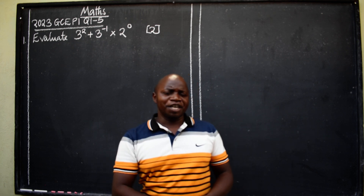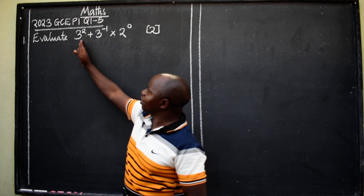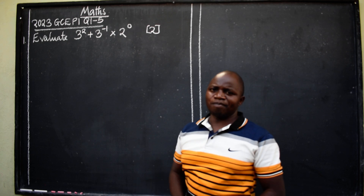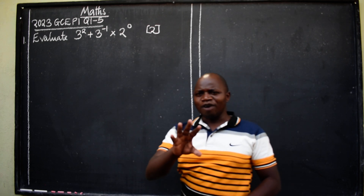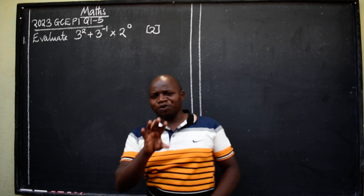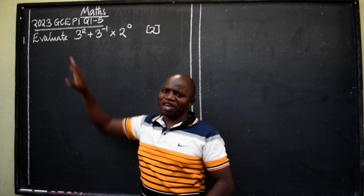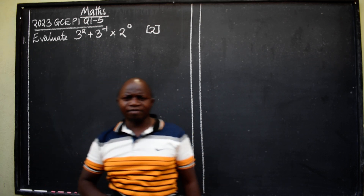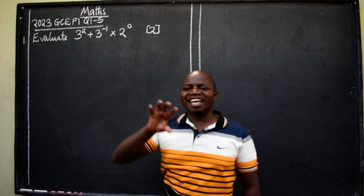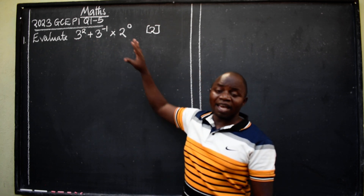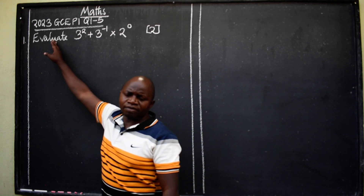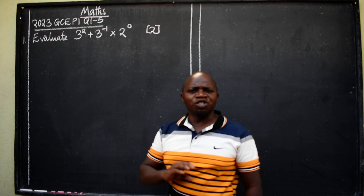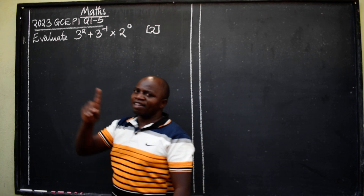Let's begin with the first question. Evaluate 3 to the power 2, plus 3 to the power negative 1, times 2 to the power 0. This question is worth 2 marks. The term here is 'evaluate' — they are asking you to find the exact value. That is evaluation; you are not simplifying, you are not solving, you are evaluating.